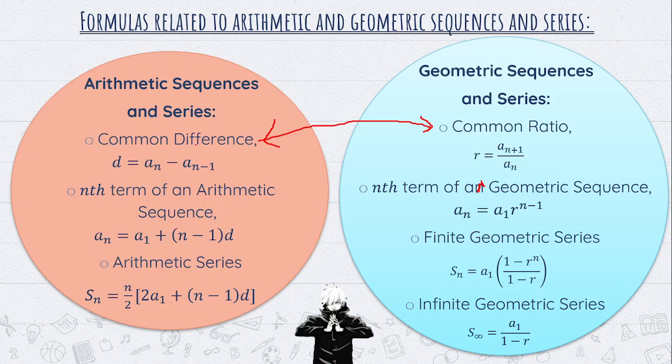For geometric sequences, there are two separate formulas — one for finite geometric series and one for infinite geometric series. You need to identify the given values first: a sub 1, n, and the common ratio. You can copy these formulas onto a 1/4 index card or take a screenshot from the video for reference during quizzes.